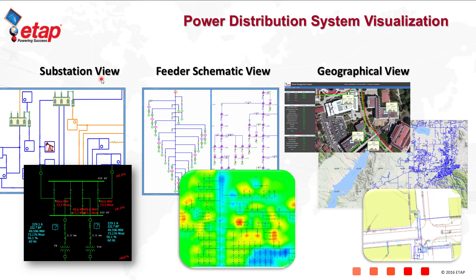ETAP Grid includes various types of visualization of your electrical system data, including a substation view, a feeder schematic view, as well as a geographical view. What's unique about ETAP Grid is the substation view, feeder schematic views, and geographical views are always synchronized.